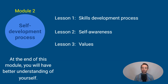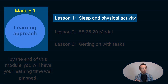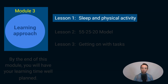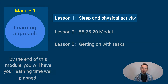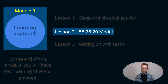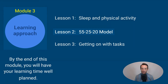So we move on to module three: learning approach. Lesson one is all about sleep and physical activity. If you haven't established your sleeping and exercise routines then you are losing big — you just need to get these right to improve your efficiency. Lesson two explains the 55-25-20 model, which will show you how you should divide your learning efforts to increase efficiency.